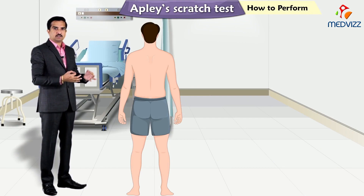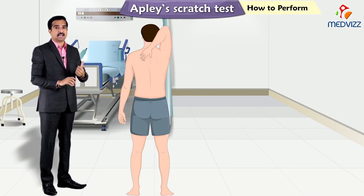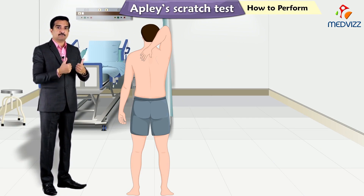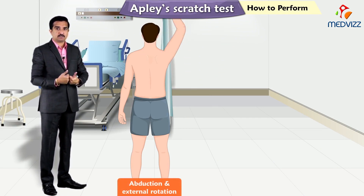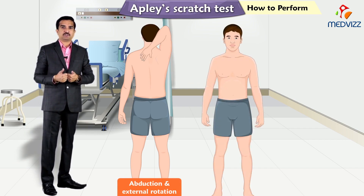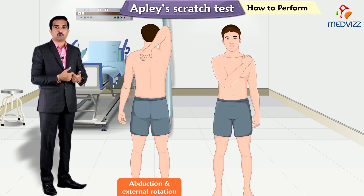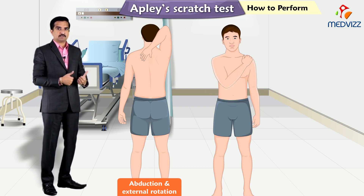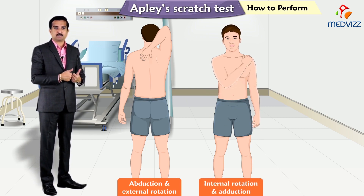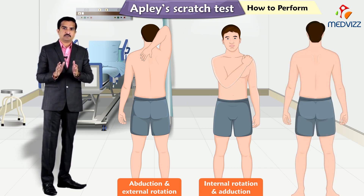Ask the patient to reach behind their head and touch the medial aspect of the opposite scapula. This involves abduction and external rotation. Now ask the patient to reach across their chest and touch the acromion of the opposite shoulder, and this involves internal rotation and adduction.